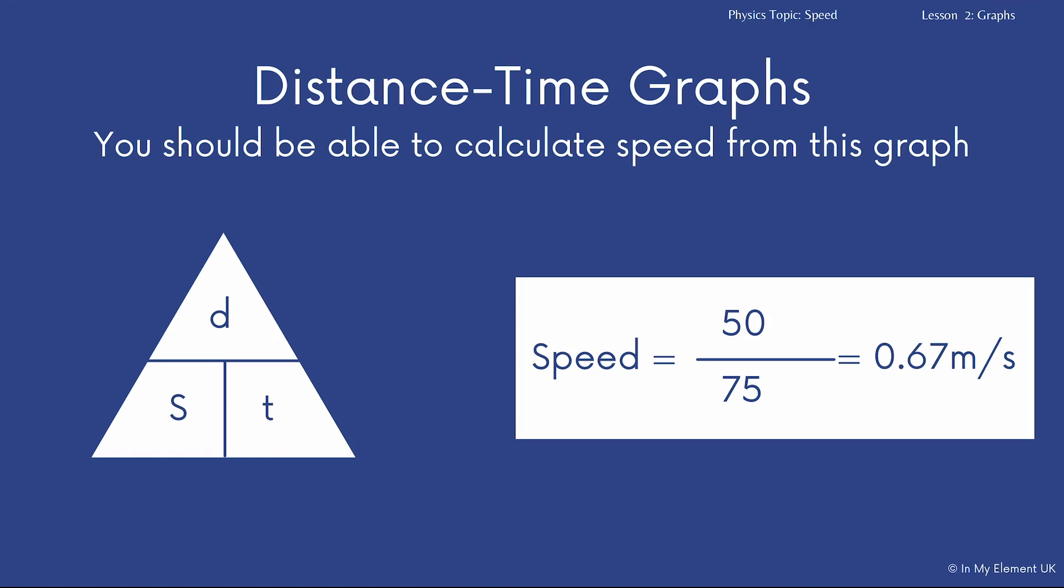Now, it's important you can do this from different graphs and at different points on the graph. And it would be the same if it was on that final point of the graph and that final red line that we highlighted where it was going in a different direction. You could still calculate the speed on the return journey.